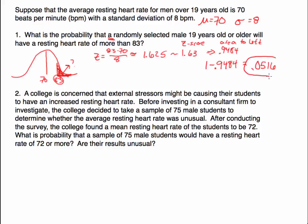When I get 1 minus 0.9484 I get 0.0516. So there is a probability of 0.0516, which if we convert to a percentage is 5.16% of males having a resting heart rate more than 83. I knew I was going to be using a regular bell curve with the population mean and standard deviation of 8 because I'm talking about selecting a random individual from the population.